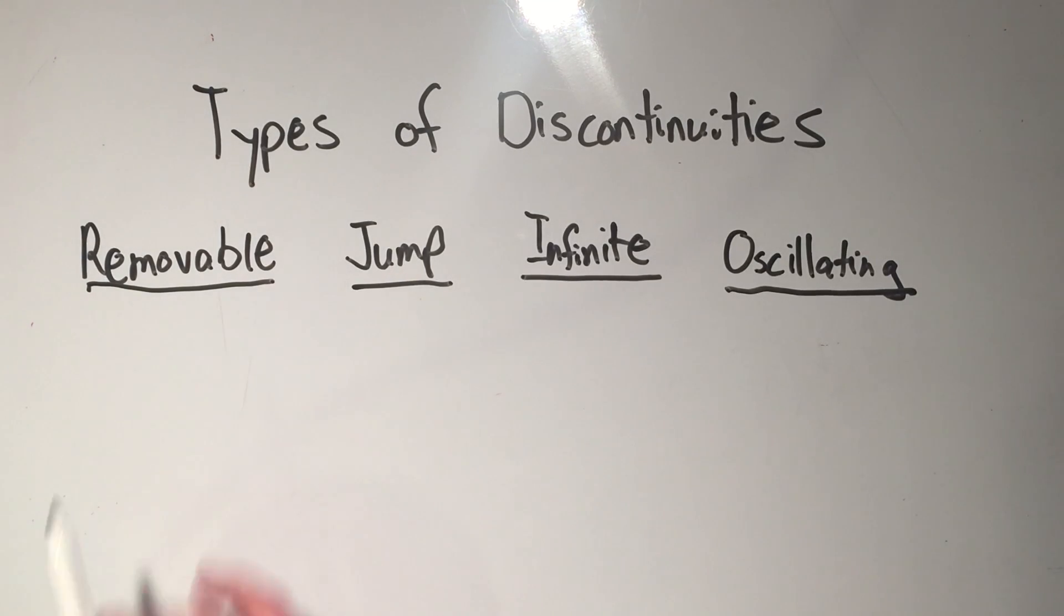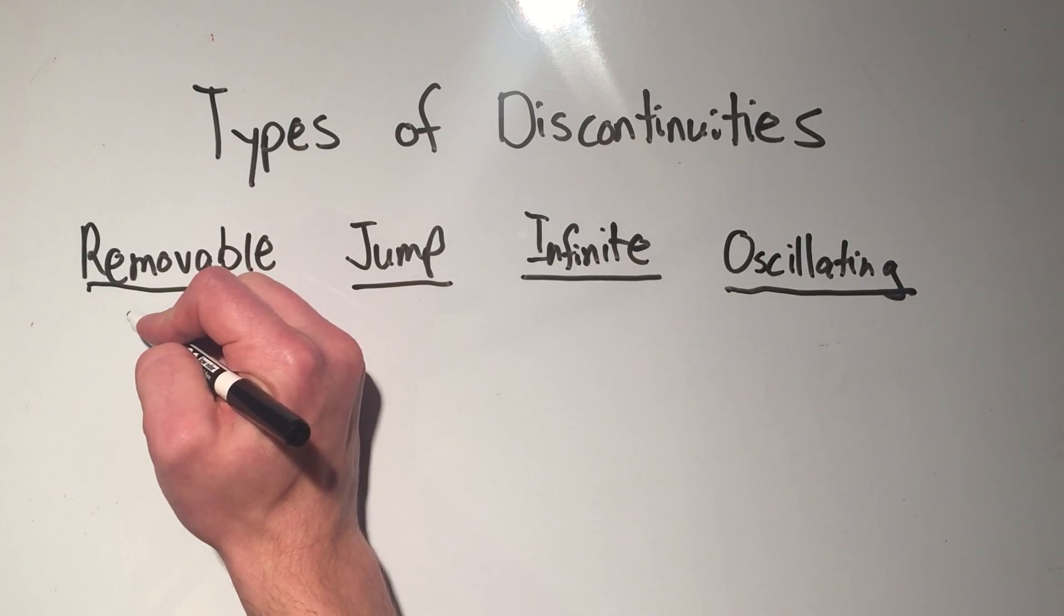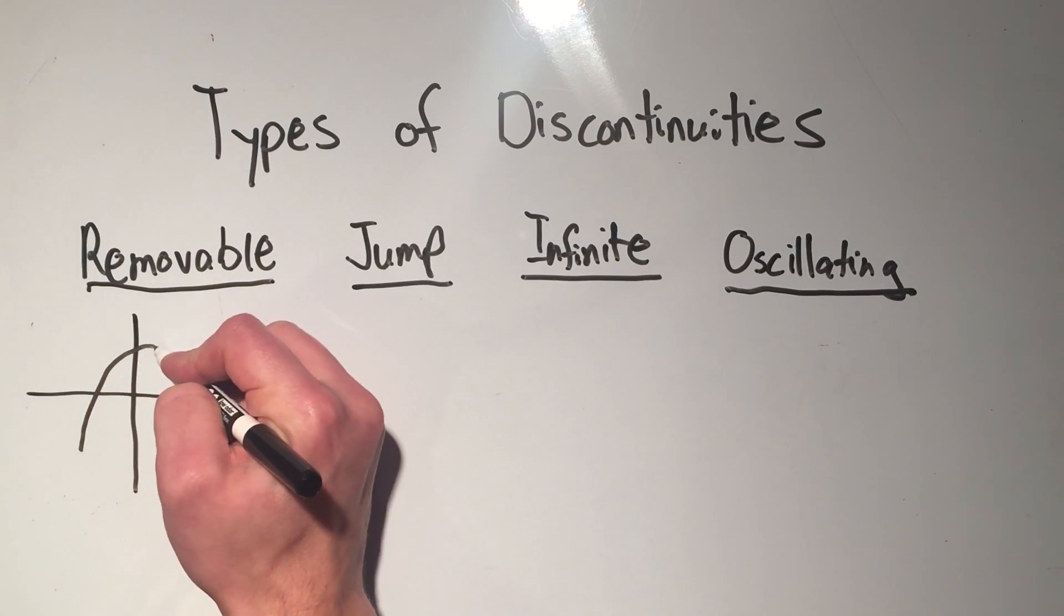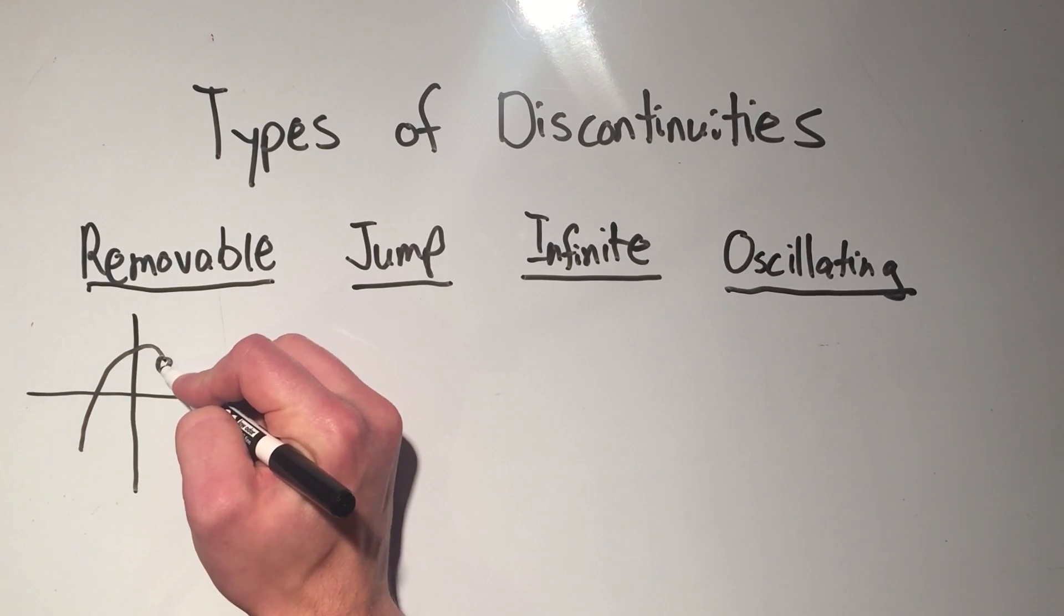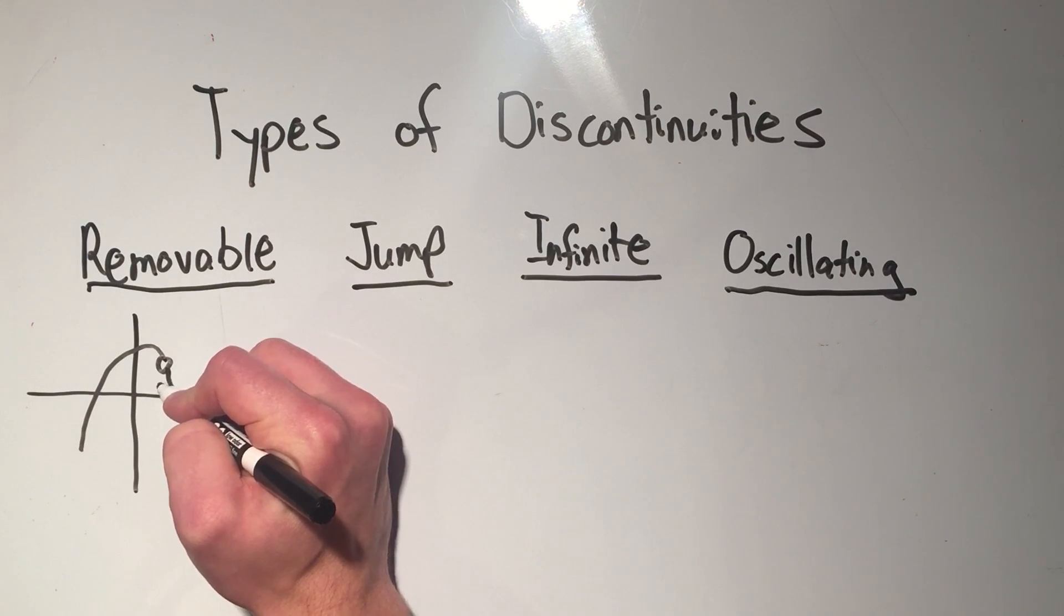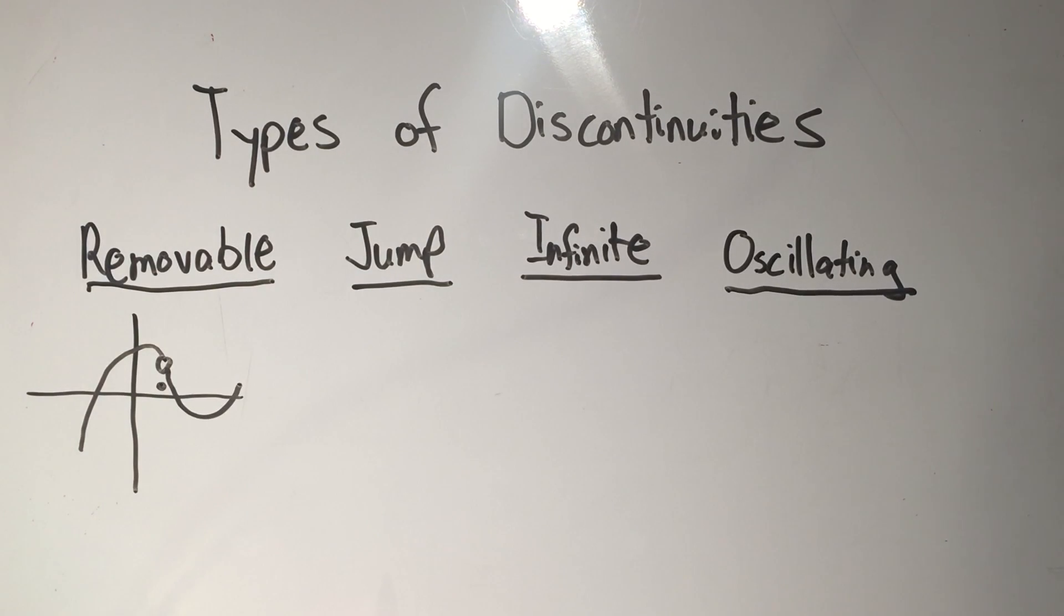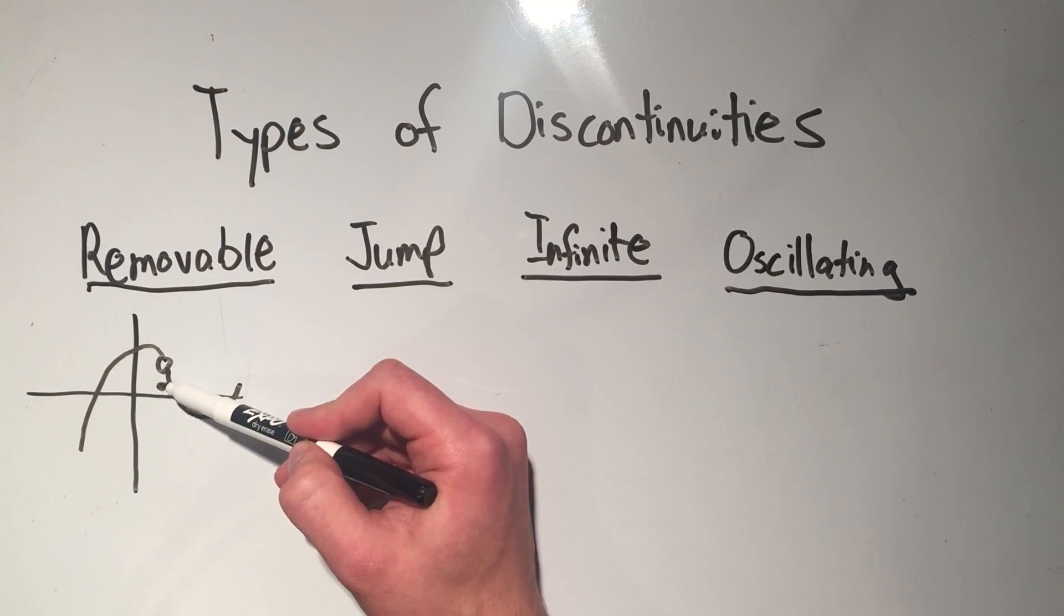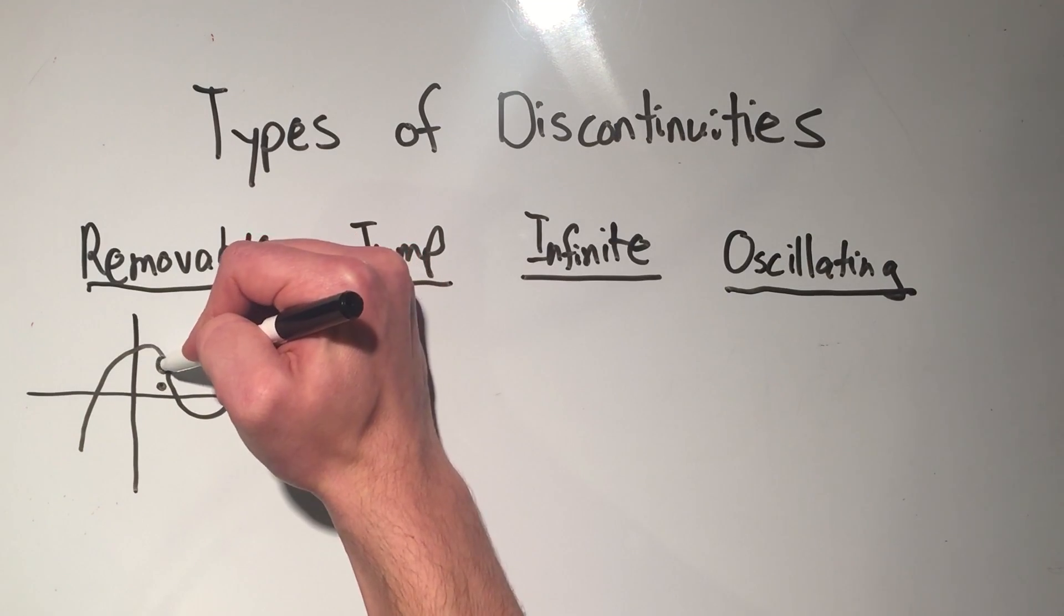The first type is removable. Now a removable discontinuity looks like this. It's when you have a seemingly continuous graph except at one point. So my graph would be continuous all except this little value here, and it's like instead of this I've got the hole moved down here. And the idea is you can just remove this discontinuity by placing this hole and filling it in.